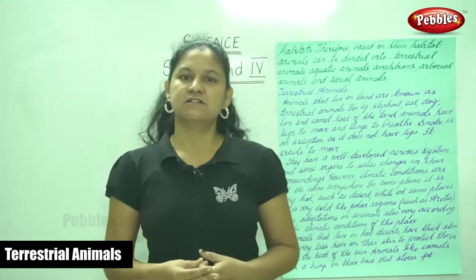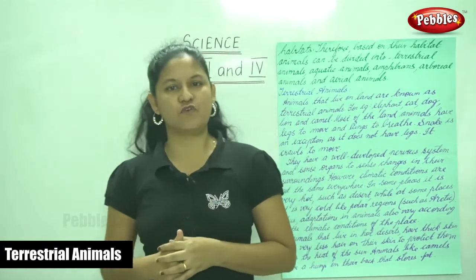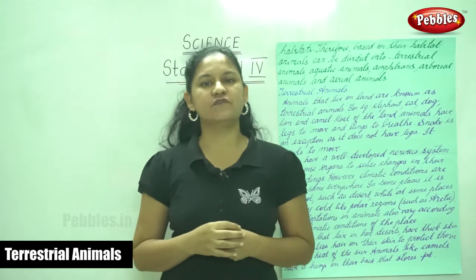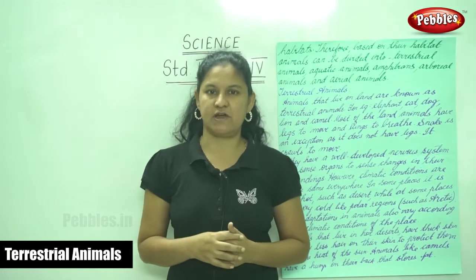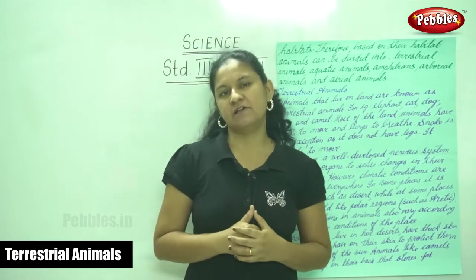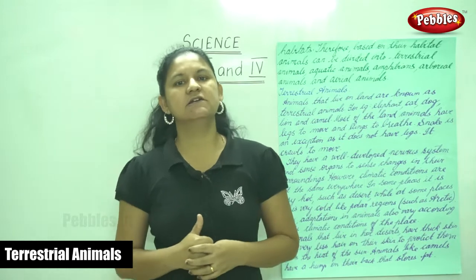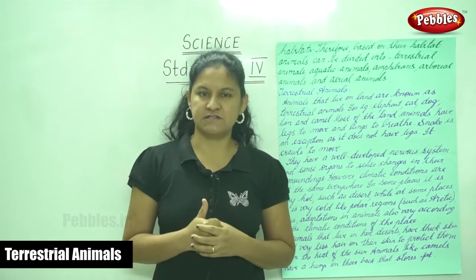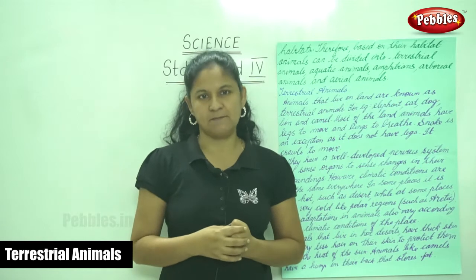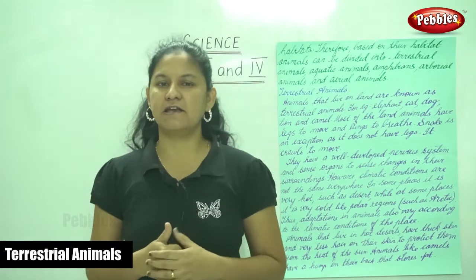Hi and welcome to Pebbles channel. We are talking about science for standards 3 and 4. We have seen about the plants and their uses — not only for humans but for animals as well — and how the plant prepares its own food. The leaves prepare food by absorbing carbon dioxide and sunlight. The plant breathes in carbon dioxide and gives out oxygen, which is used for humans and animals to breathe. The different parts of the plant are the root, which grows below the ground, and the shoot, which grows above the ground.